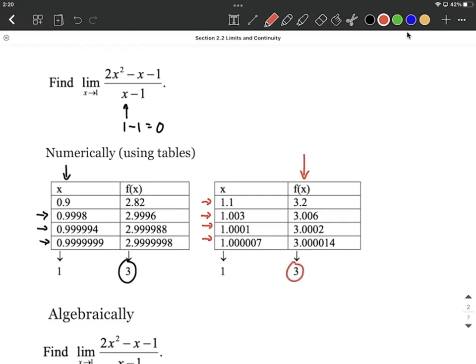Therefore, we could say, based on these numerical tables, that the limit as x approaches 1 for this function is approaching 3, or it would equal 3. Now, plugging in numerically and using tables can be a little bit of a pain because we have to plug in all these values in for our x's and evaluate using our calculators over and over again.